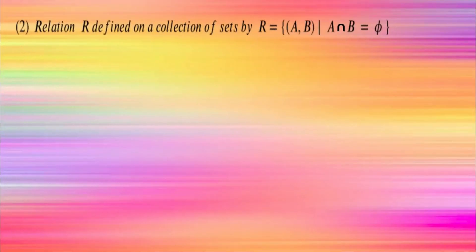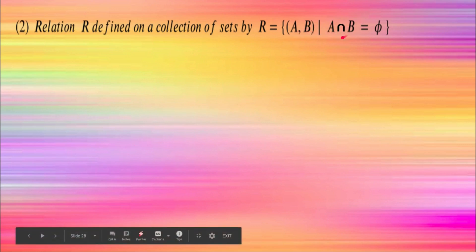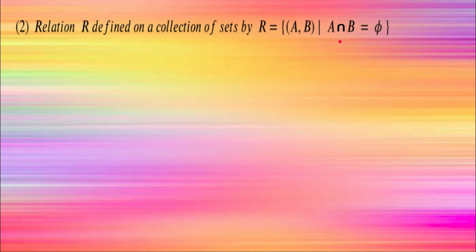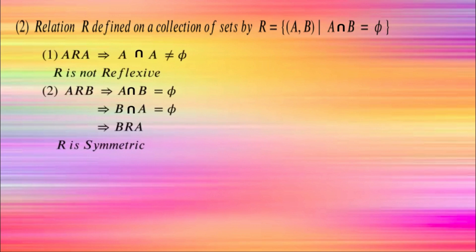Next problem: relation R defined on a collection of sets, where R equals the set of all (A, B) such that A intersection B is the empty set. So A is related to B if A intersection B is empty. Check reflexivity: A related to A means A intersection A must be empty. But A intersection A equals A, which is not empty. So it is not reflexive.